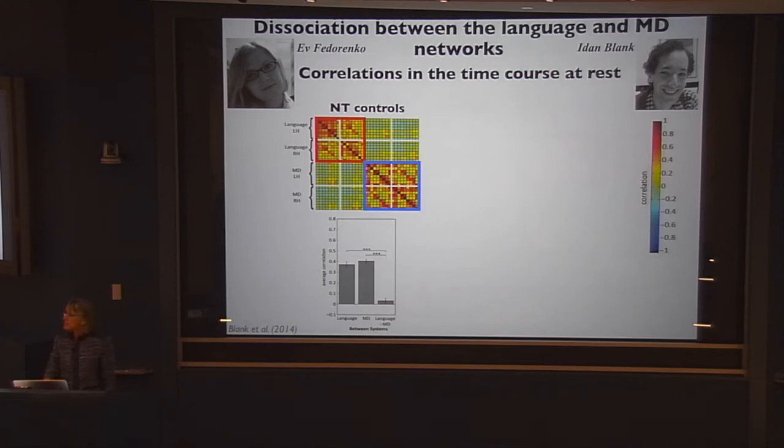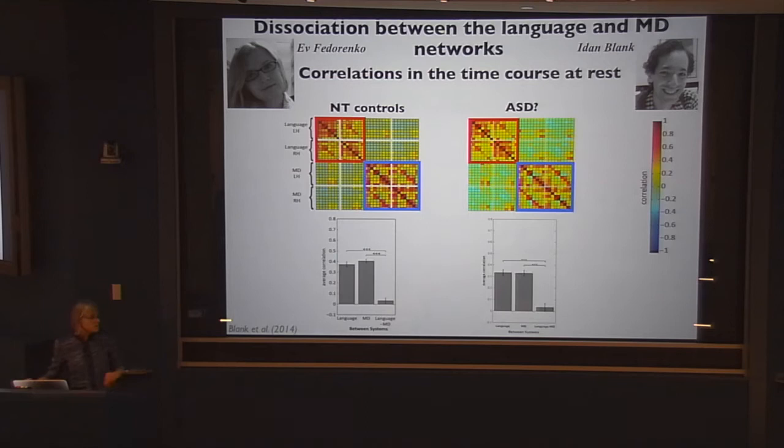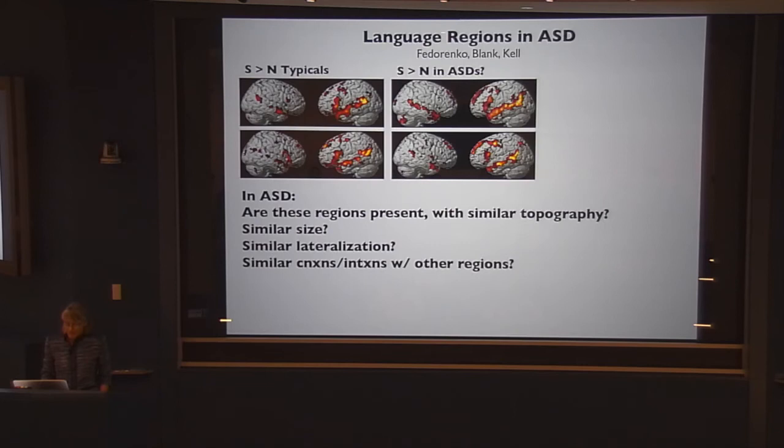We can then ask whether you see this in people with autism. It looks exactly the same in high-functioning people with autism. So I'm sorry about the long string of null to small results, but that's just what it is. It says that not only are the basic language regions present — in fact even larger — they're showing the same patterns of correlations with other systems that we see in typical subjects.